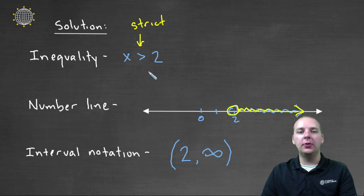If this happened to have been greater than or equal to two, then I would have done a closed dot, and this would have been a bracket instead of a parenthesis. But nevertheless, that's not what we had.